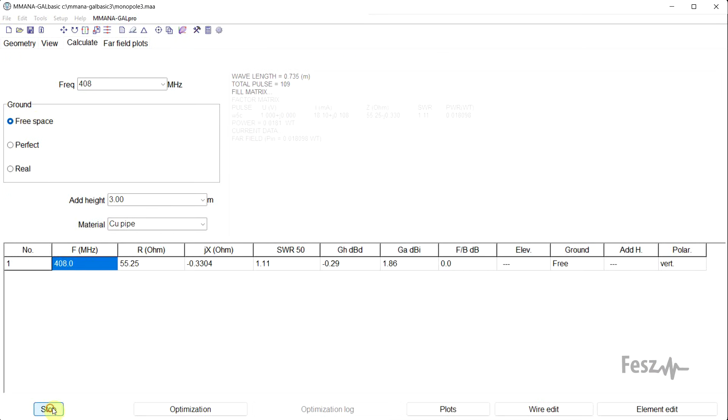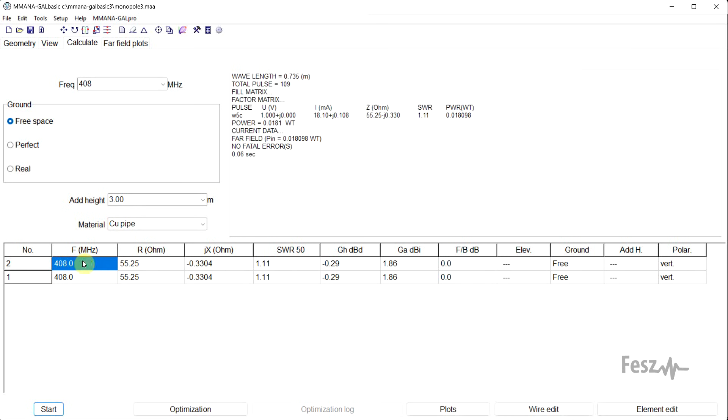So in free space, its resonance frequency is approximately 408 megahertz, and the resistance value is 55 ohms. So even though I use the values for 434 megahertz, it's a bit off. But to some extent, this is normal.